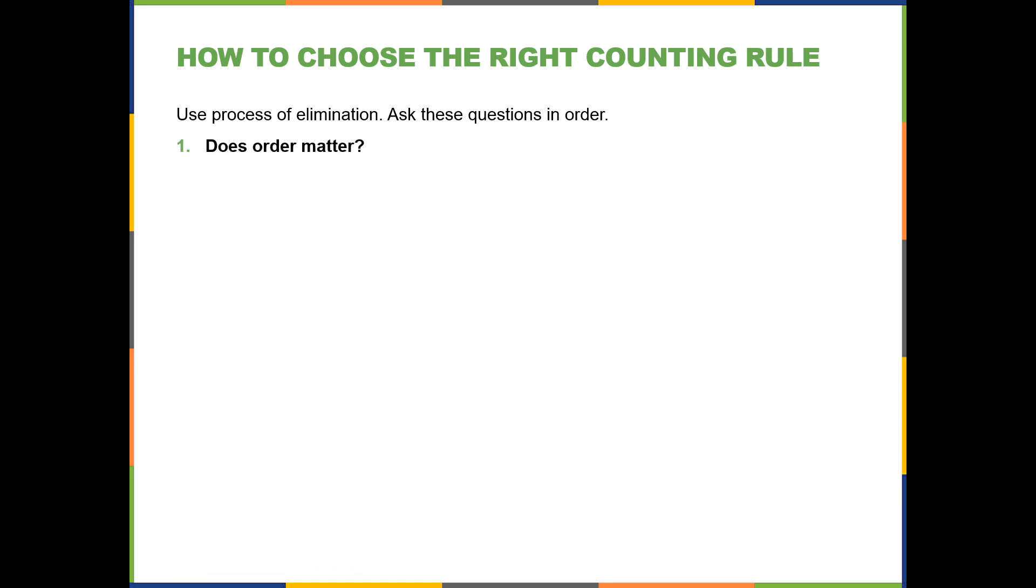First of all, you'll ask, does order matter? If order does not matter, then you use the combinations formula. No more searching necessary. So that's the most important question to ask in the very beginning, is whether or not it makes a difference what the order is going to be. So that's the formula, the nCr. In a different video, we'll go over how to calculate that.